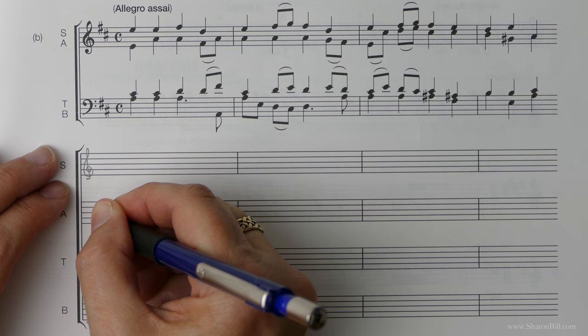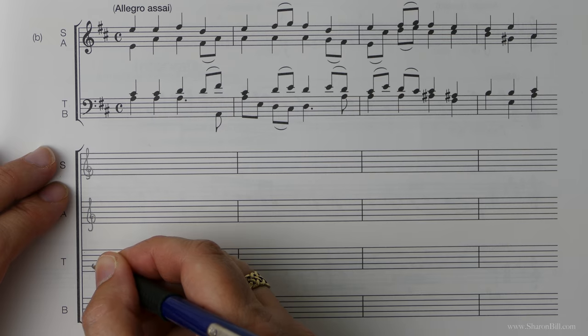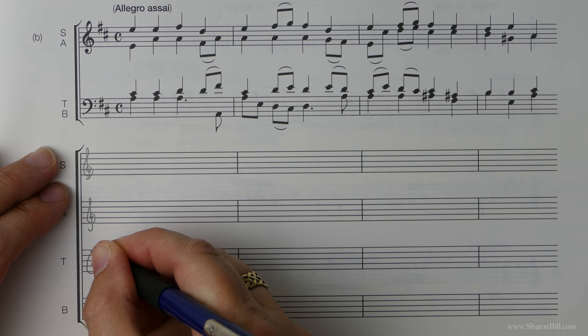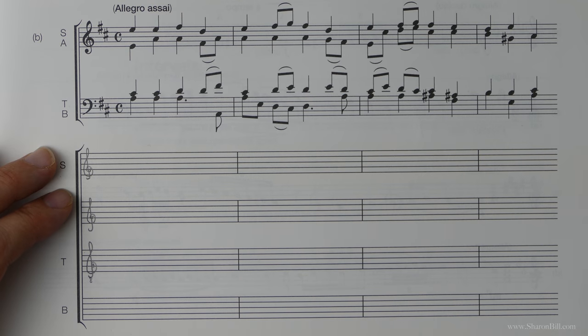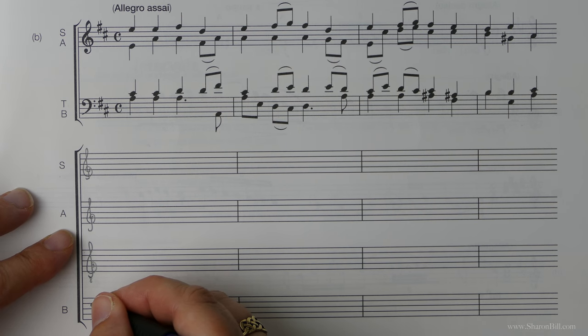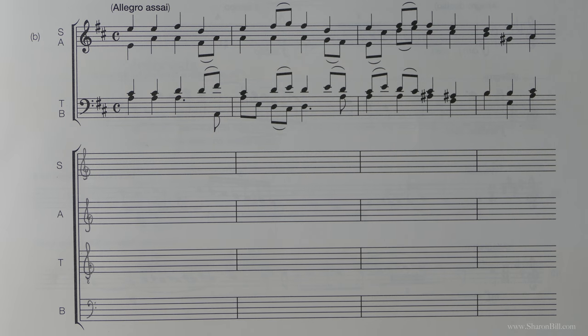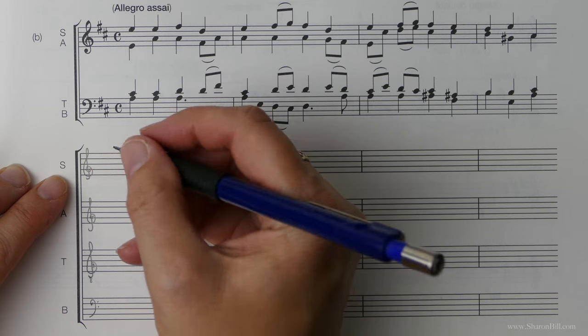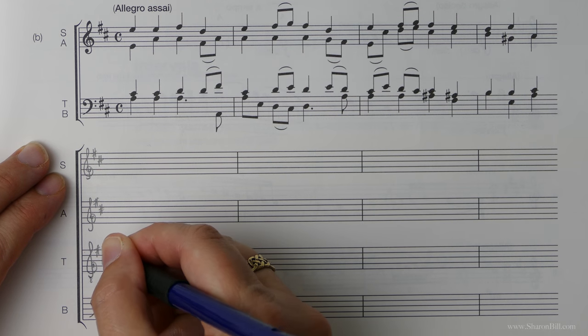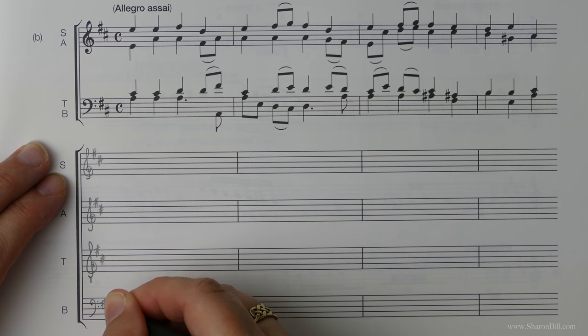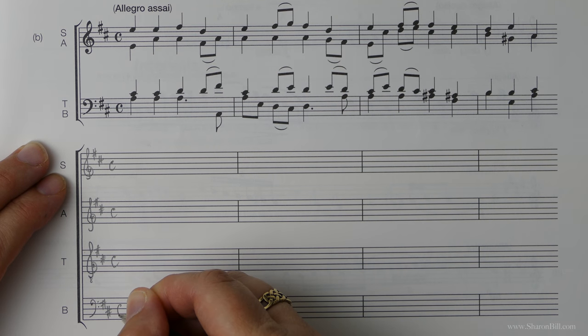So we need our clefs. Soprano and alto have treble clef singing at pitch. Tenor voice part also has the treble clef, but because they are transposed an octave higher we put this little figure 8 to show that we've changed that to the accepted form. And then of course the bass part is in bass clef. Once you've got your first note it's easy peasy and quite therapeutic and enjoyable. We need our key signatures. Each voice part needs the key signature. Just make sure you position those correctly for the keys and the clef appropriately. Time signature and then we're ready to go.